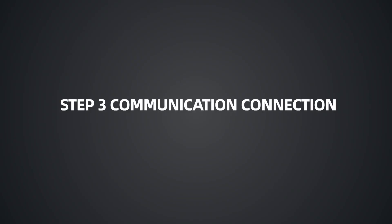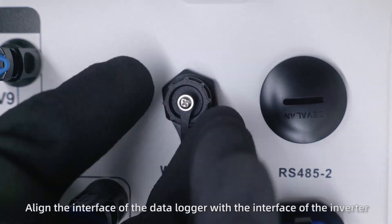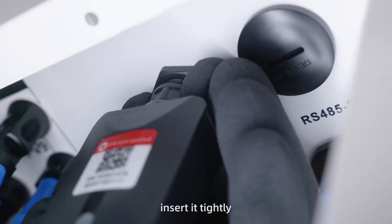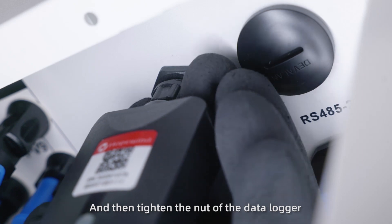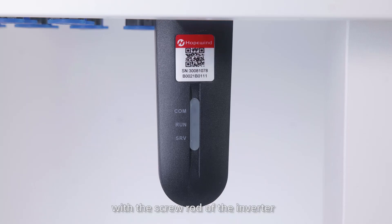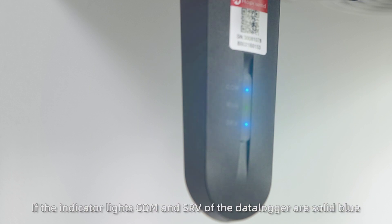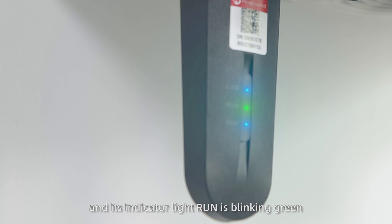Step 3. Communication Connection. Align the interface of the data logger with the interface of the inverter, insert it tightly, and then tighten the nut of the data logger with the screw rod of the inverter. When the inverter starts up, if the indicator lights calm, and SRV of the data logger are solid blue, and its indicator light run is blinking green, then the data logger is in normal operation.